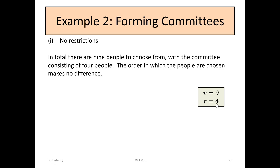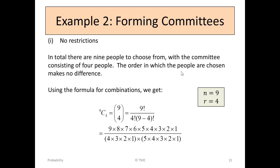We can look at this in terms of n, the total number of people available, which is 9, and the number of people we want to choose, which equals 4. The order doesn't matter, so it's a combinations question. Using the formula for combinations, we get 9C4. 9C4 is 9 factorial over 4 factorial times (9 minus 4) factorial. 9 factorial on the top is 9 by 8 by 7 by 6 all the way down to 1. 4 factorial is 4 by 3 by 2 by 1. And 9 minus 4 is 5, so 5 factorial.